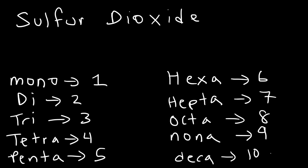So when you hear the word sulfur, sulfur has the chemical symbol S. Dioxide - di is two, so there's two oxygen atoms. So it's going to be SO2, sulfur dioxide.